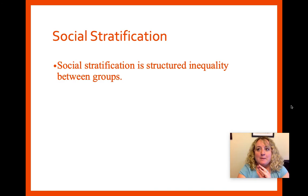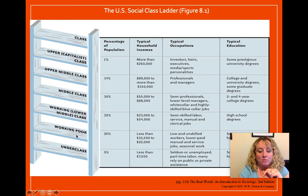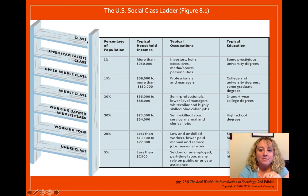One of the best ways to think about social stratification is like a ladder. Structured inequality between groups is exemplified in a ladder because you have different rungs. At the bottom rung, you have the underclass or people in complete poverty, then the working poor, lower middle class, middle class, upper class, upper capitalist class, and up here I would put the super rich.